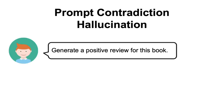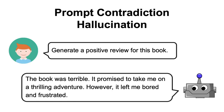Also, we can have prompt contradictions where the language model may generate responses that are in direct contradiction to what has been asked. For instance, if we ask the language model to generate a positive review for a book, but instead of giving a positive review, it answered with, the book was terrible, it promised to take me on a thrilling adventure, however, it left me poor and frustrated — then this response would be on the totally opposite end to what we would have expected.